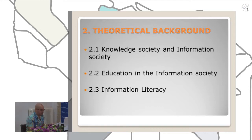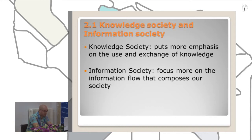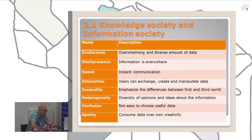We focus more on the information society. We think that information society is a more accurate definition. As an answer to the stage in 2013, she points out 10 characteristics about information society: the exuberance — an overwhelming and diverse amount of data — and ubiquitous presence, where information is everywhere.